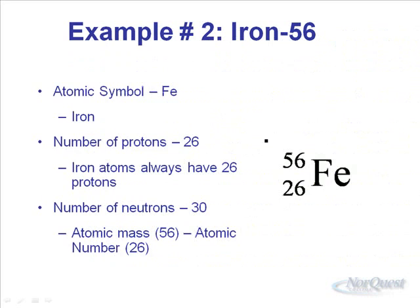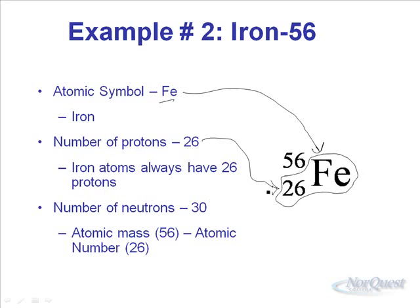Another example: iron has the symbol Fe with atomic number 26. Iron always has 26 protons — if you change that number, it's no longer iron. If you have atomic number 27, it's a different element. The number of neutrons requires subtraction: for this example, 30 plus 26 gives the mass number.